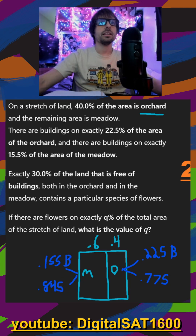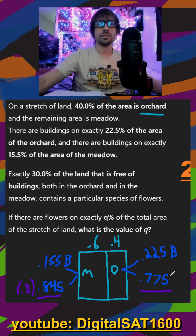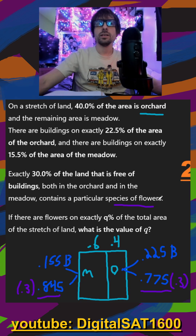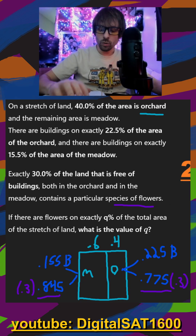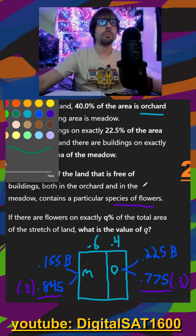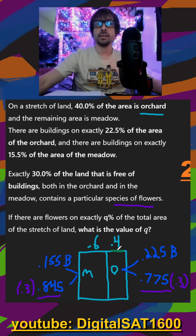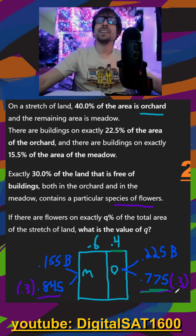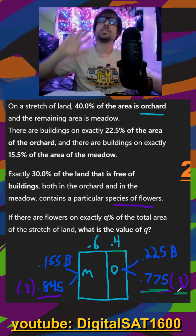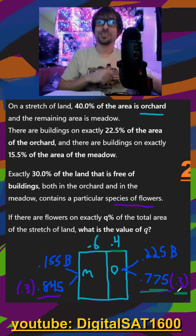Finally, they say that 30% of the land that is free of buildings — so that's going to be these two — 30% of this is going to be something. Both in the orchard and the meadow contains a particular species of flowers. We need to start all the way back at 40% of our land is orchard, then times 0.775 because that's what doesn't have buildings, and then times 0.3 because that's the part of the non-building land in the orchard that has flowers.